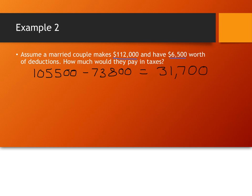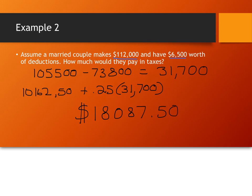All right. So, since we're in the $73,800 to $148,850 category, what we do is we take the $10,162.50 and add on 25% of the excess. All right. So, $10,162.50, add on 25% of the excess. And, this would mean we pay $18,087.50 in taxes.